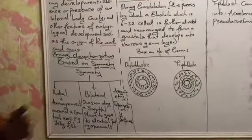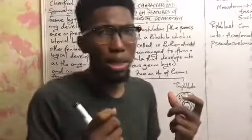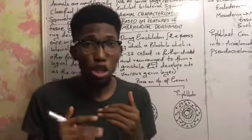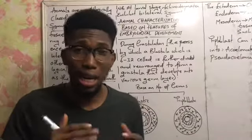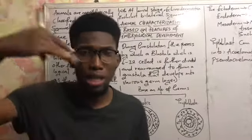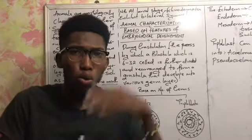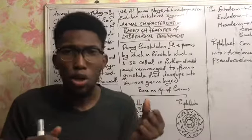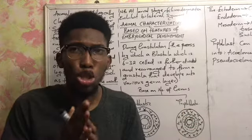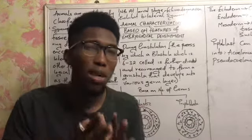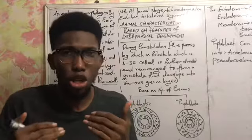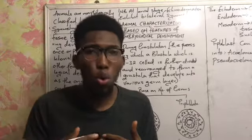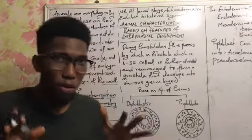We must also take note that echinoderms — such as holothurians and starfish — actually show bilateral symmetry at their larval stage, but as they grow to become adults they begin to show radial symmetry, as majorly seen in your starfish.